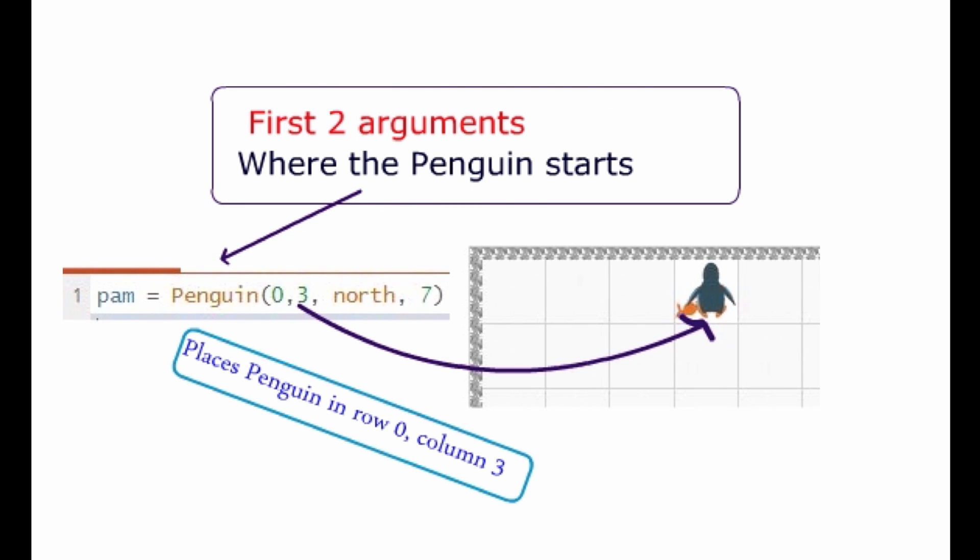Same thing's happening here, except pam is now in row 0, column 3 facing north, and holding 7 fish.